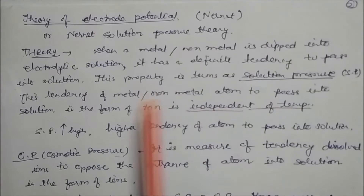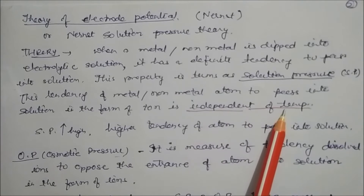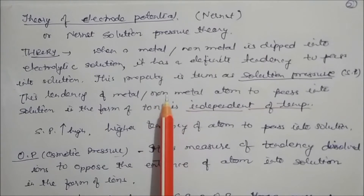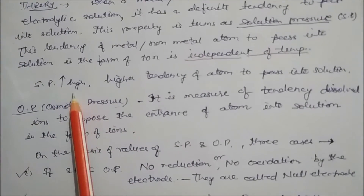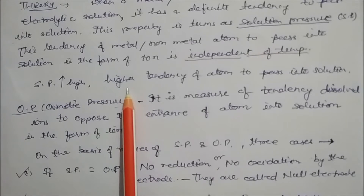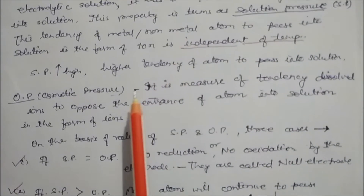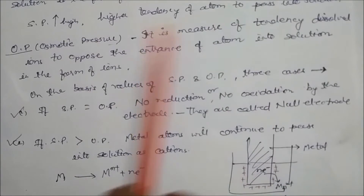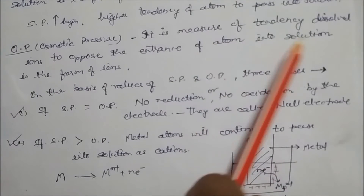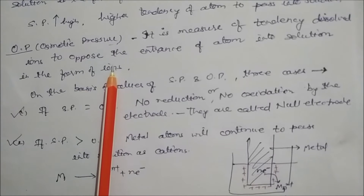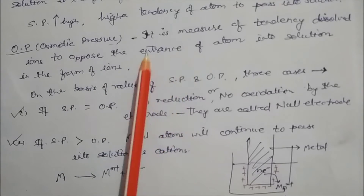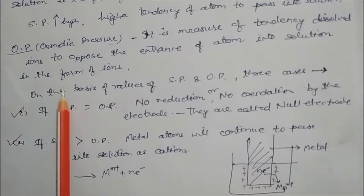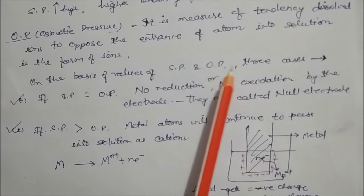The tendency of metal or non-metal atoms to pass into the solution in the form of ions is independent of temperature. If the solution pressure is very high, there is a higher tendency for atoms to pass into the solution. There is also osmotic pressure, which is the tendency of dissolved ions in the electrolytic conductor to oppose the entrance of atoms into the solution. Based on solution pressure and osmotic pressure, three cases arise.